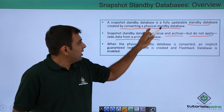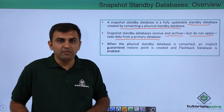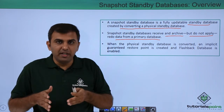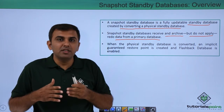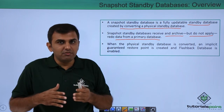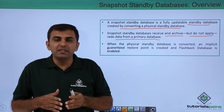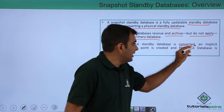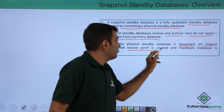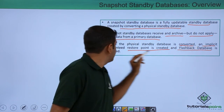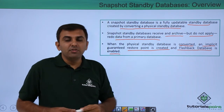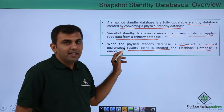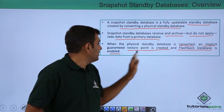When you convert the physical standby database to a Snapshot Standby Database, the primary continues sending redo information to the standby. However, at this point the standby is in snapshot mode, so it receives the redo but does not apply it. When the physical standby is converted, an implicit guaranteed restore point is created and flashback database is enabled.